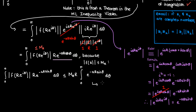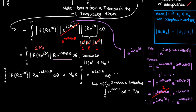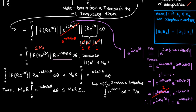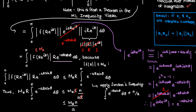Now comes the fun part, because we can apply Jordan's inequality. The integral of the exponential we have strongly resembles the integral in Jordan's inequality — the only difference is the extra factor of a. But that doesn't matter because we can treat a and R together. Applying Jordan's inequality, this integral becomes less than or equal to π/(aR), and the R's cancel, leaving M_R times π/a.